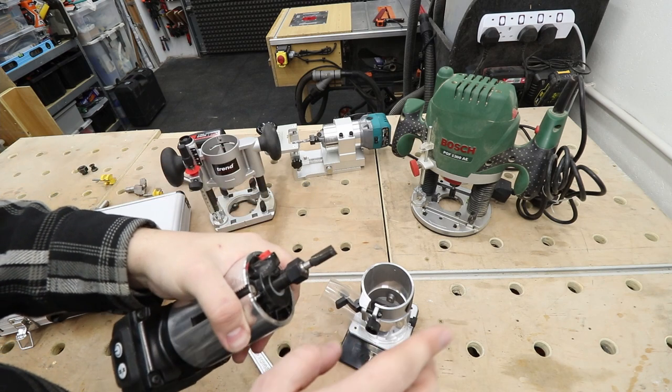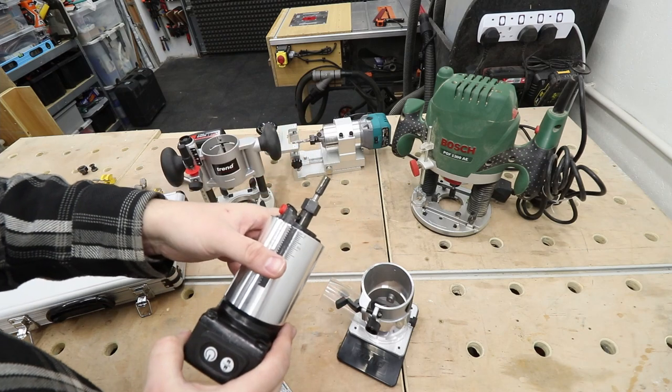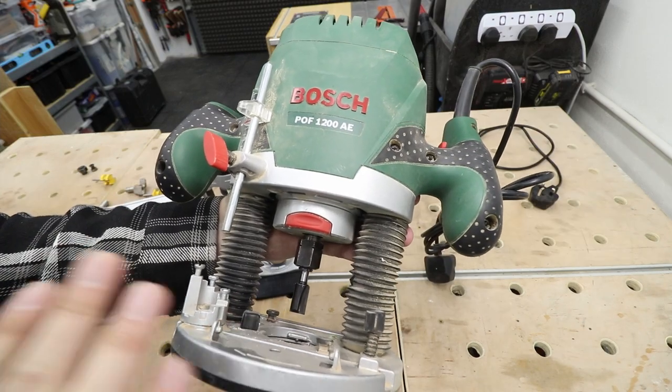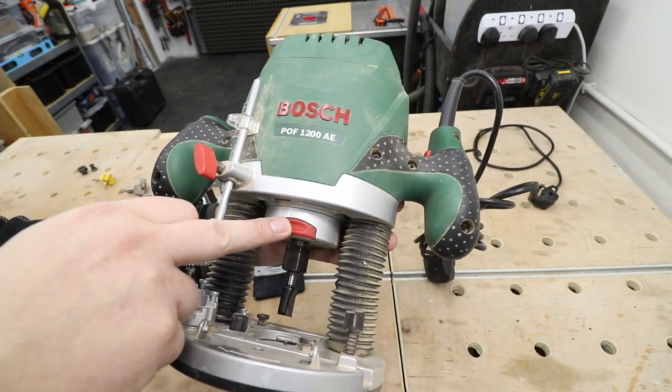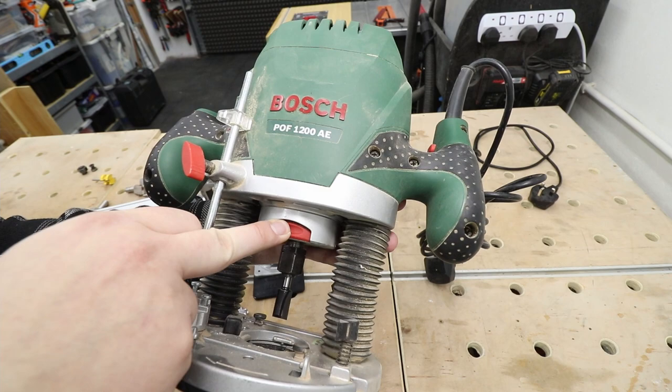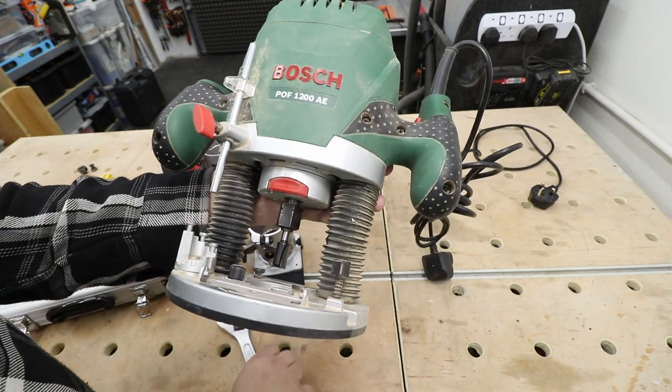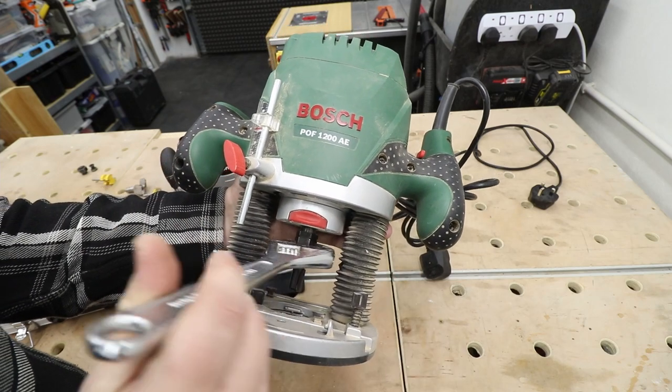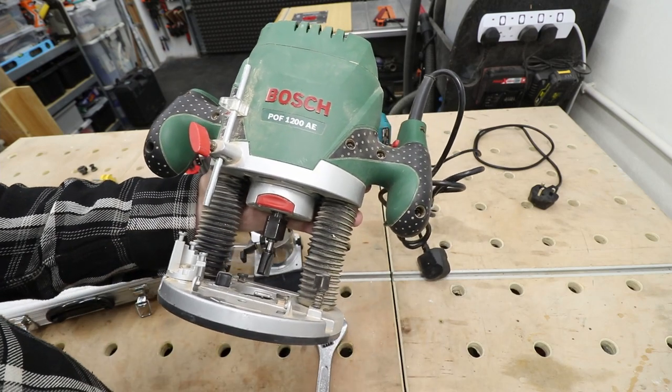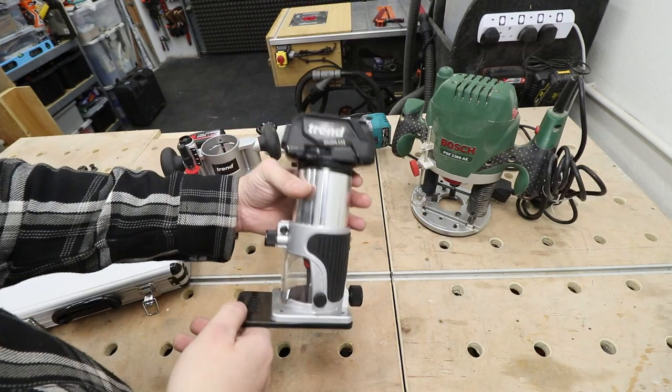With my plunge router it's exactly the same scenario, although you're not taking the base. That's the locking button here that locks the spindle from spinning, and then I've got the ability to use my key to unlock that nut and you've got access to your cutter.